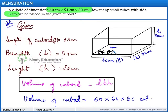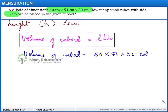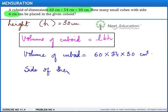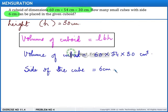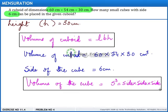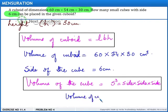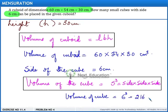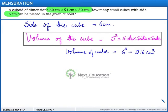Now let us find the volume of the cube whose side is given as 6 centimeters. The formula for the volume of a cube is S cubed, that is side × side × side. Using this, the volume of the cube is equal to 6 cubed, which equals 216 cubic centimeters.